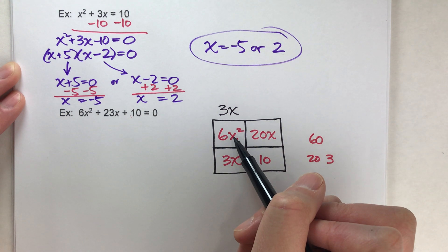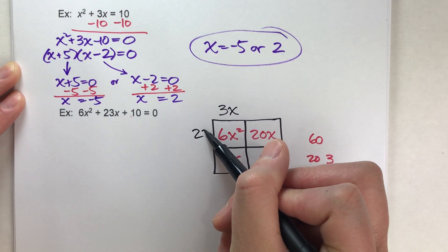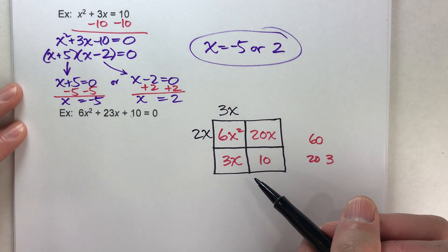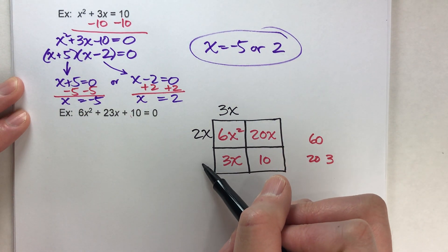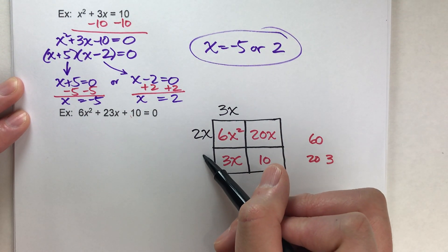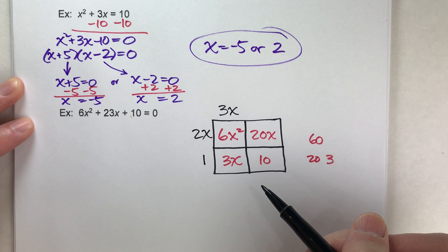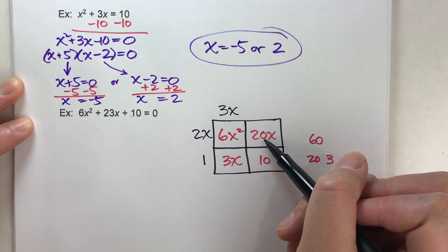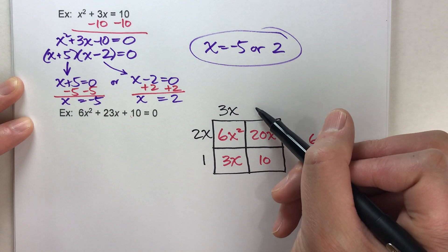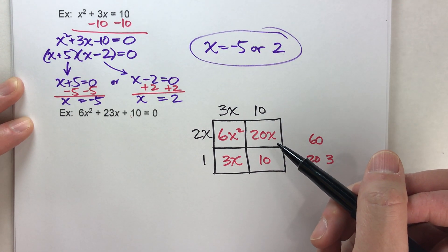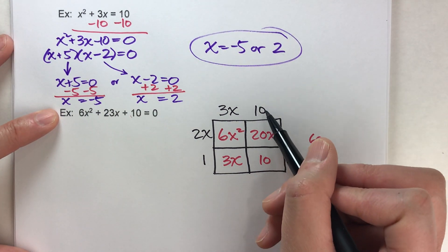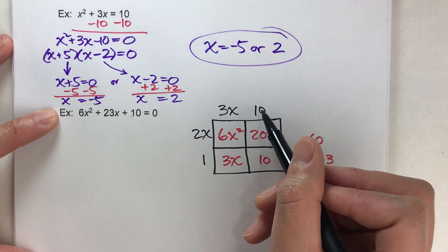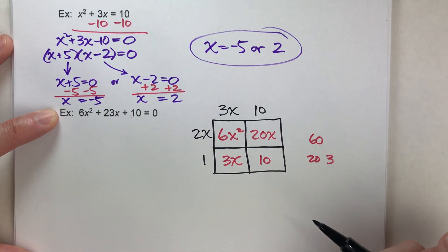3x times what gets me 6x? 3x times 2x gets me 6x squared. 3x times what equals 3x? 3x times 1 equals 3x. Now over here, 2x times what gets me 20x? 2x times 10. And does 10 times 1 get me this box? 10 times 1 equals 10. Looks good.